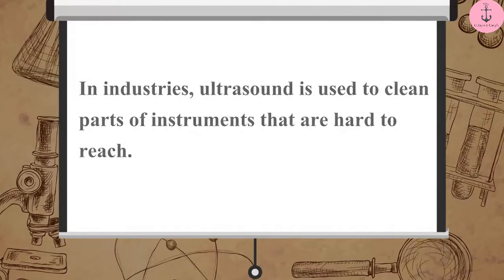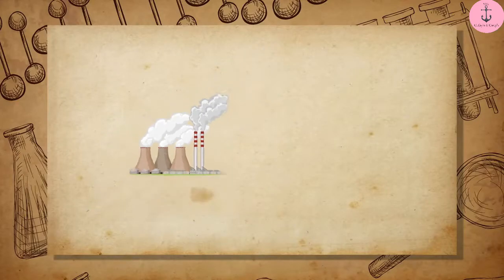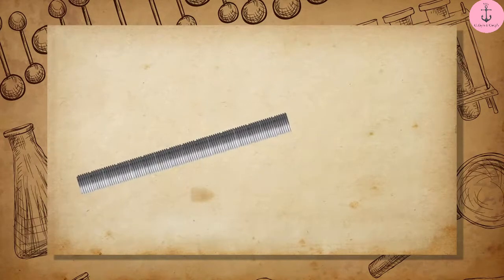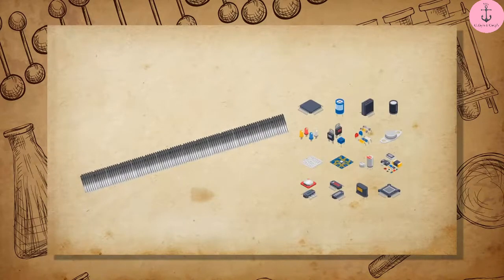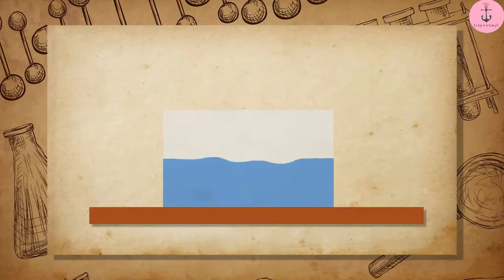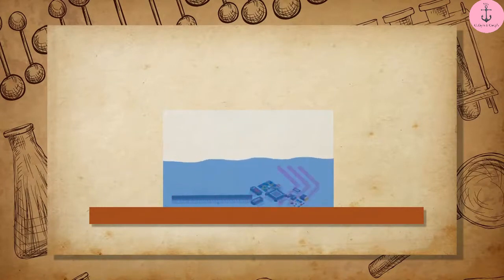In industries, ultrasound is used to clean parts of instruments that are hard to reach, like odd-shaped parts, spiral tubes, electronic components, etc. These parts are dipped in a cleaning solution and ultrasound waves are passed through it, which cleans the objects thoroughly.